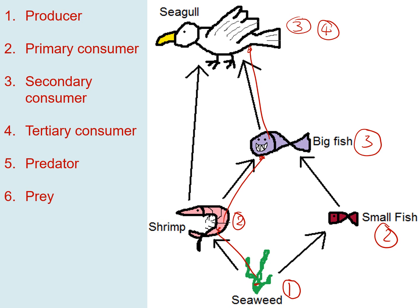Predators in this food web include the big fish and the seagull — the big fish eats other organisms, making it a predator, and the seagull eats shrimp and big fish, so that's number five for both. The prey animals — number six — are the shrimp, small fish, and big fish. The big fish is a predator of the shrimp and small fish, but it's the prey of the seagull. So different keywords can apply to the same organism depending on its position in the food web.